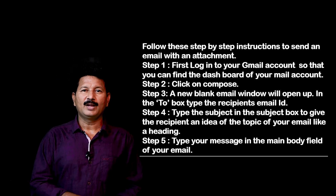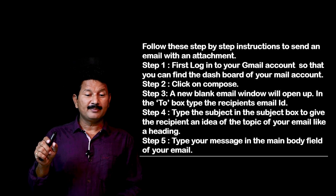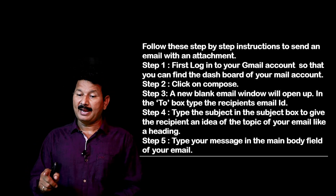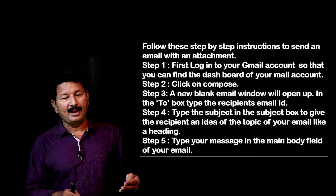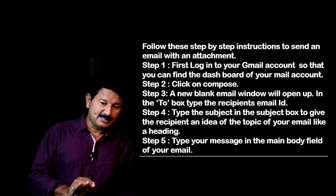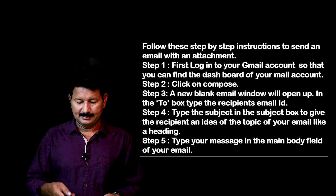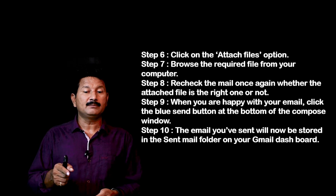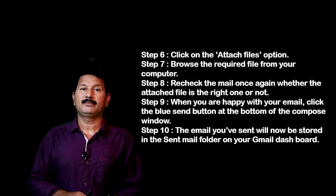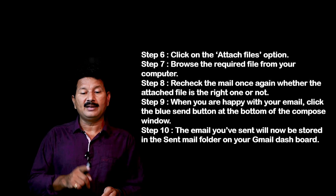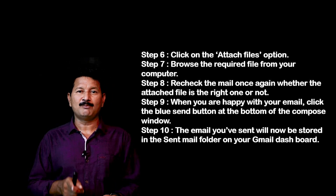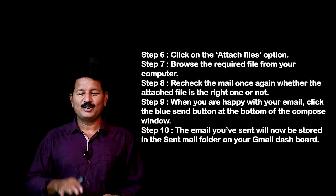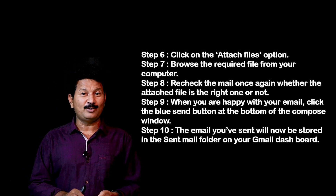Then click on 'Compose' — a new blank email window will open. In the 'To' box, type the recipient's email ID. Then type the subject in the subject box to give the recipient an idea of the topic, like a heading. Then type your message in the main body field. Click on the 'Attach Files' option, then browse the required file from your computer. Recheck the mail to confirm the attached file is correct. When satisfied, click the blue 'Send' button at the bottom of the compose window.